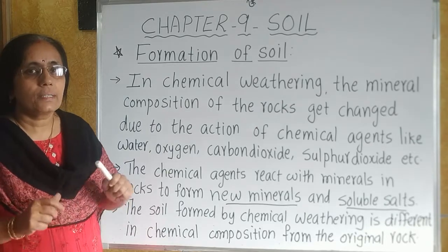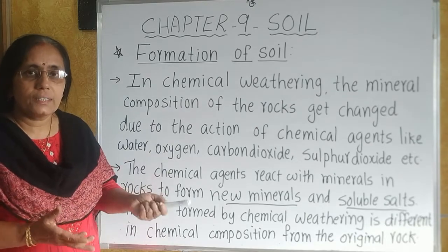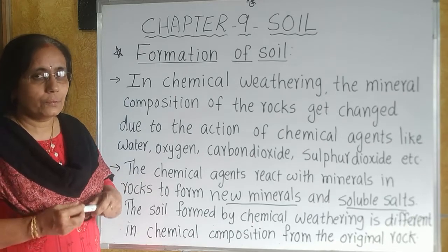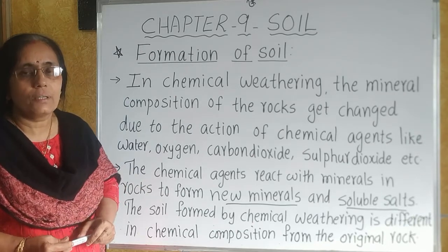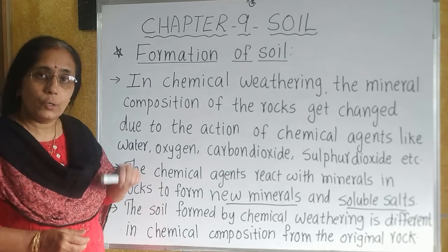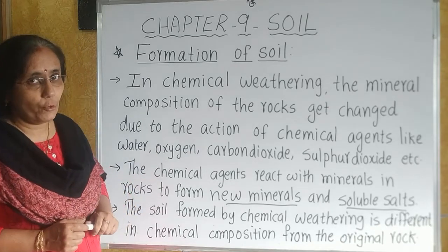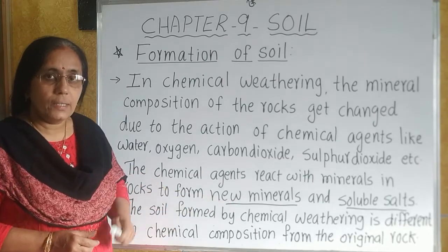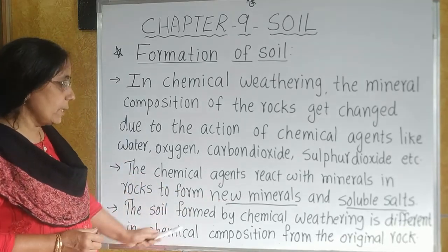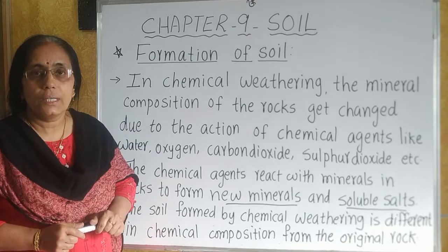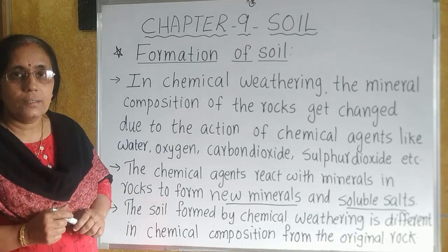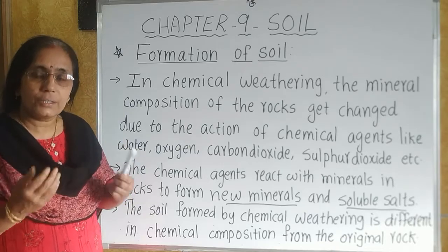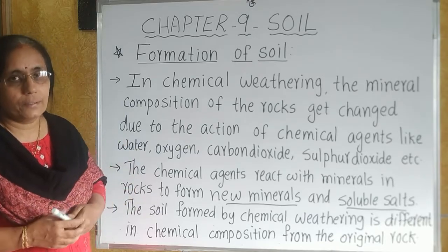Soil contains some soluble salts which are necessary for plants to grow. These minerals and soluble salts come from the rocks from which the soil is formed. The soil formed by chemical weathering is different in its chemical composition from the original rock, because the original minerals get changed to form new minerals.